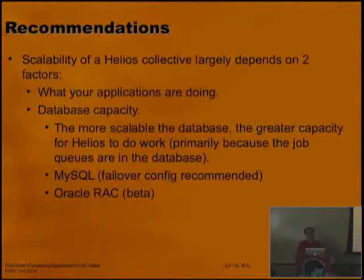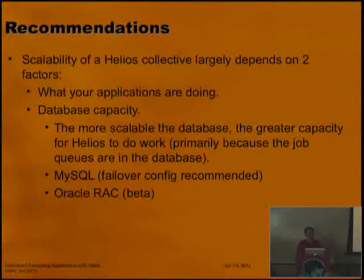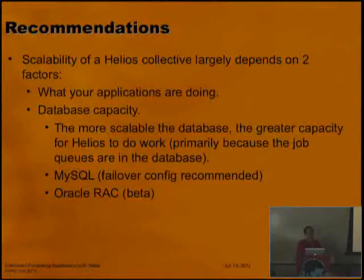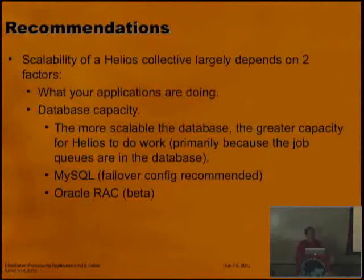As far as Helios is concerned, database capacity is a key factor. The job queuing, logging, and configuration are all in a database. Helios can work faster if it has a larger database. MySQL can do a lot of interesting things — I've seen MySQL scale much higher than I expected. The company I worked for when we originally wrote this had a relatively beefy MySQL server, not heavily tuned, no clustering, nothing out of the ordinary. And they were doing something like millions of jobs a day.